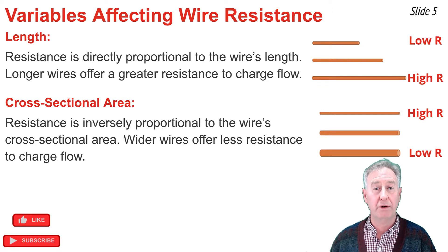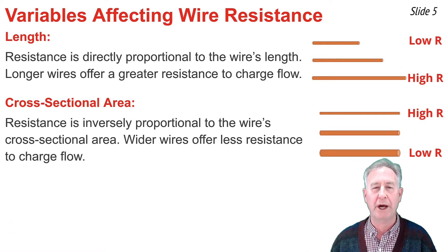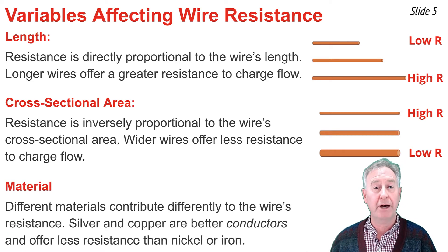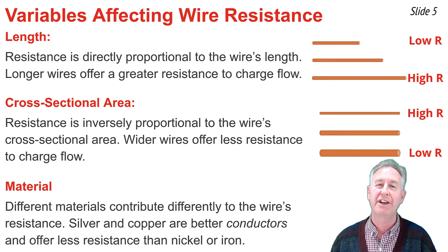The wider wires with greater cross-sectional area have less resistance than the narrower wires. When it comes to materials, different materials offer different amounts of resistance to the flow of charge. It's materials like copper and silver that are the best of conductors and offer less resistance to the flow of charge than materials like nickel or iron.